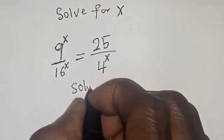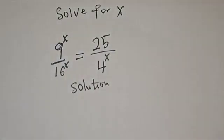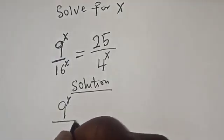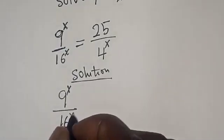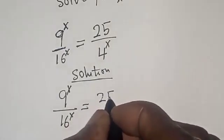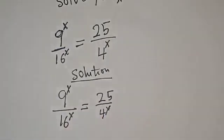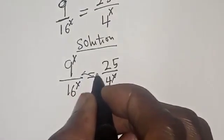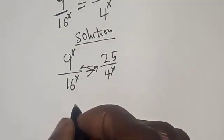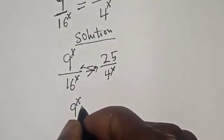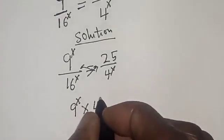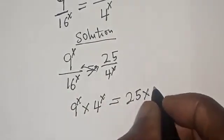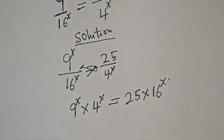Solution. We have the given equation: 9 raised to power s divided by 16 raised to power s is equal to 25 divided by 4 raised to power x. Let's cross multiply. Now if you cross multiply, we have 9 raised to power s multiplied by 4 raised to power x is equal to 25 multiplied by 16 raised to power x.